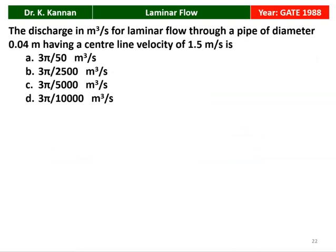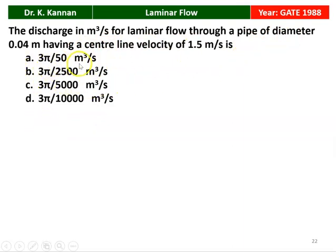Next question from the GATE 1988 question paper. The discharge in m³/s for a laminar flow through a pipe of diameter D = 0.04 m having centerline velocity 1.5 m/s. The four options are: 3π/500, 3π/2500, 3π/5000, and 3π/10000. The correct answer is option 4: 3π/10000 m³/s, which is the discharge for diameter 0.04 m and centerline velocity 1.5 m/s.